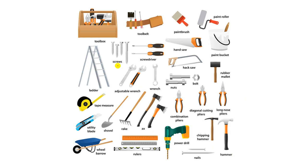As we said, we have the screws, ladder or a stepladder, paint bucket, paint bucket, paint roller, paint brush. You can use this picture to improve your vocabulary about tools and instruments. We also have wheelbarrow, and also shovel, and rake, utility blade, and others.